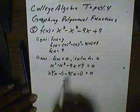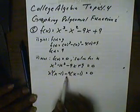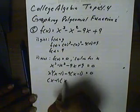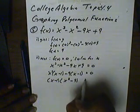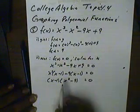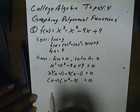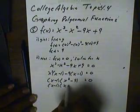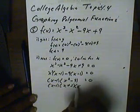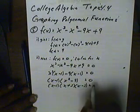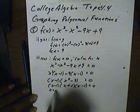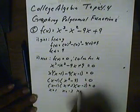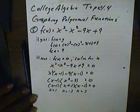The greatest common factor for the second group would be negative nine, giving negative nine times (x minus one). We now have an overall greatest common factor of (x minus one). Taking that out, we have (x minus one)(x squared minus nine). Since x squared minus nine is the difference of two squares, we get (x minus one)(x plus three)(x minus three) equals zero. Our x-intercepts are x equals one, x equals negative three, and x equals positive three.